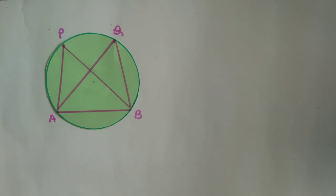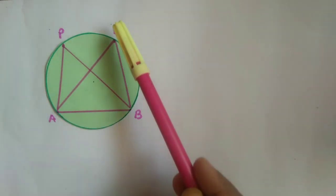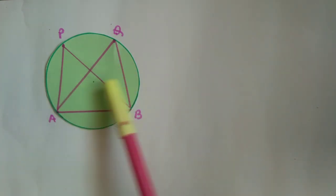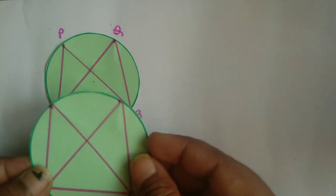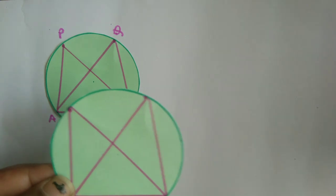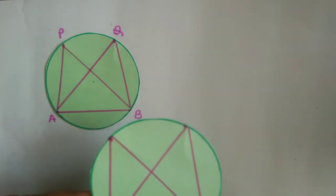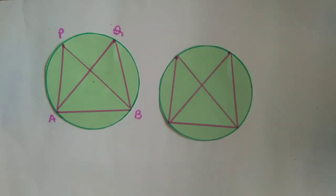Now you can see angle APB and angle AQB are on the same segment, that is, they share the same base AB. We have made a replica. Now we will mark the angles.